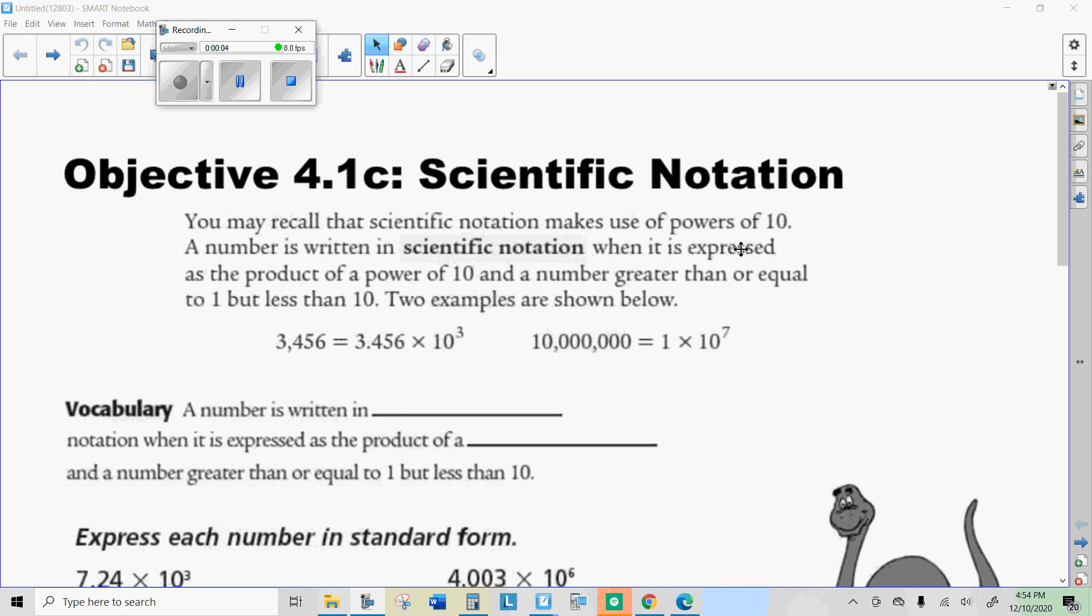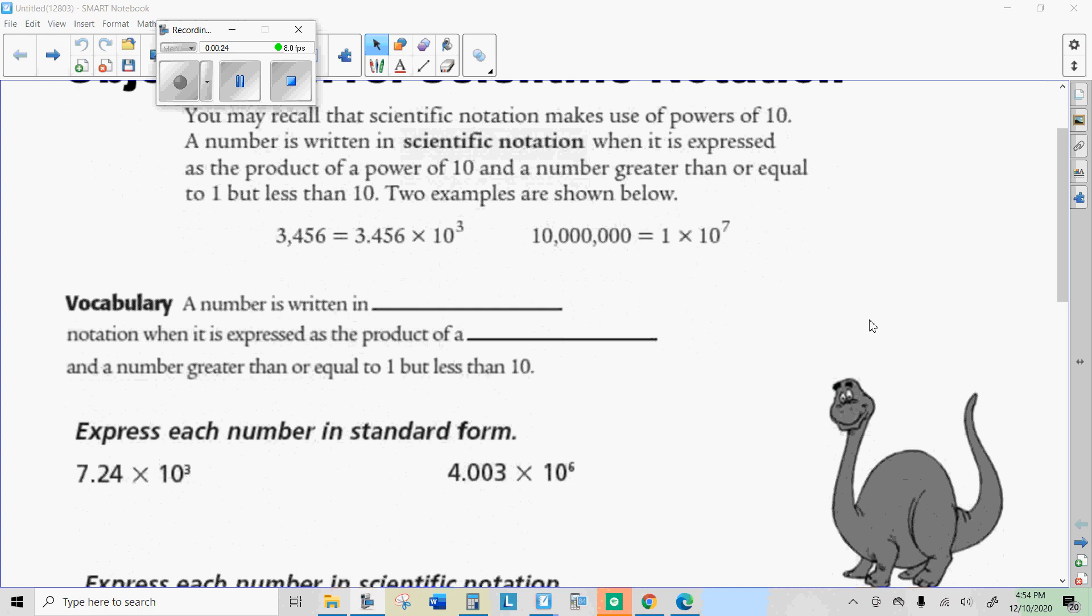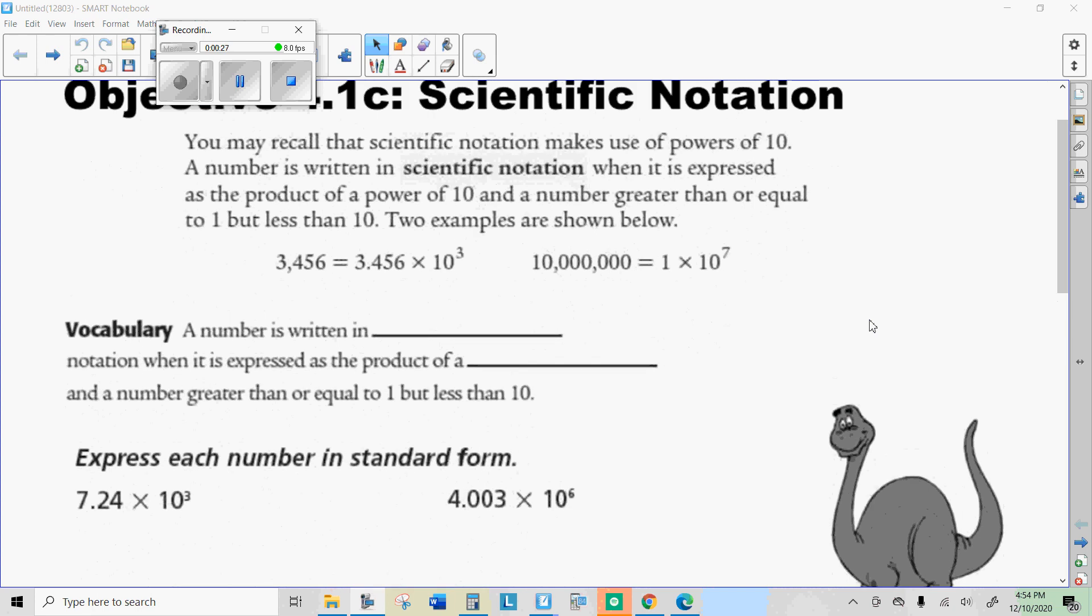Well, howdy there internet students. This is objective 4.1c scientific notation, which a lot of this is going to be a review for you, but it's a good review because we use scientific notation a lot. The new thing will be numbers that have negative powers in order to write them in scientific notation.